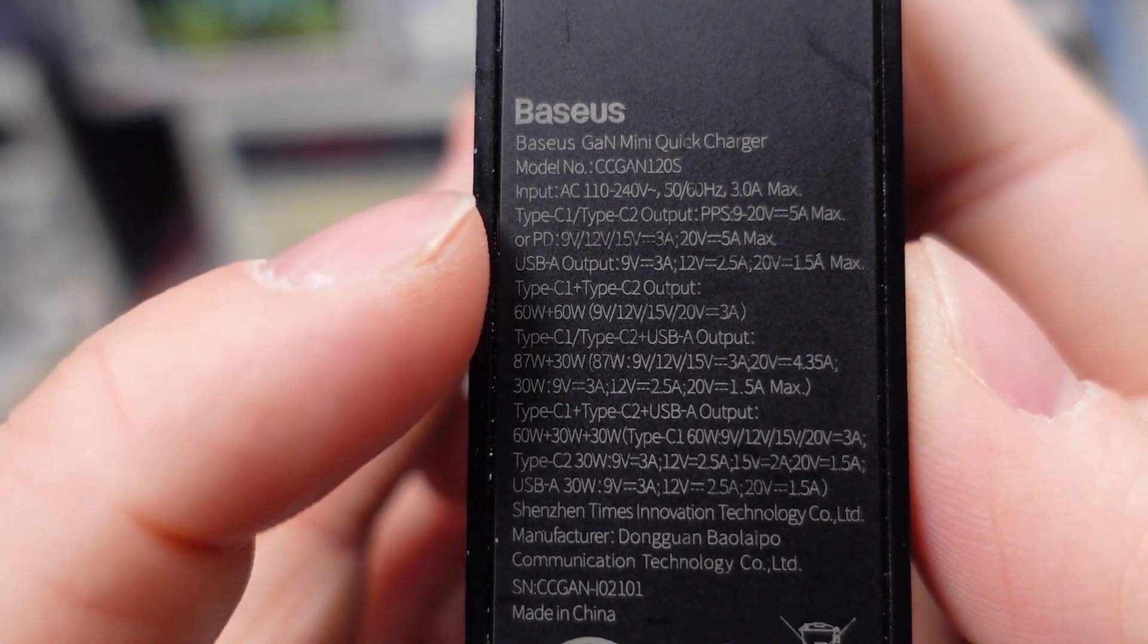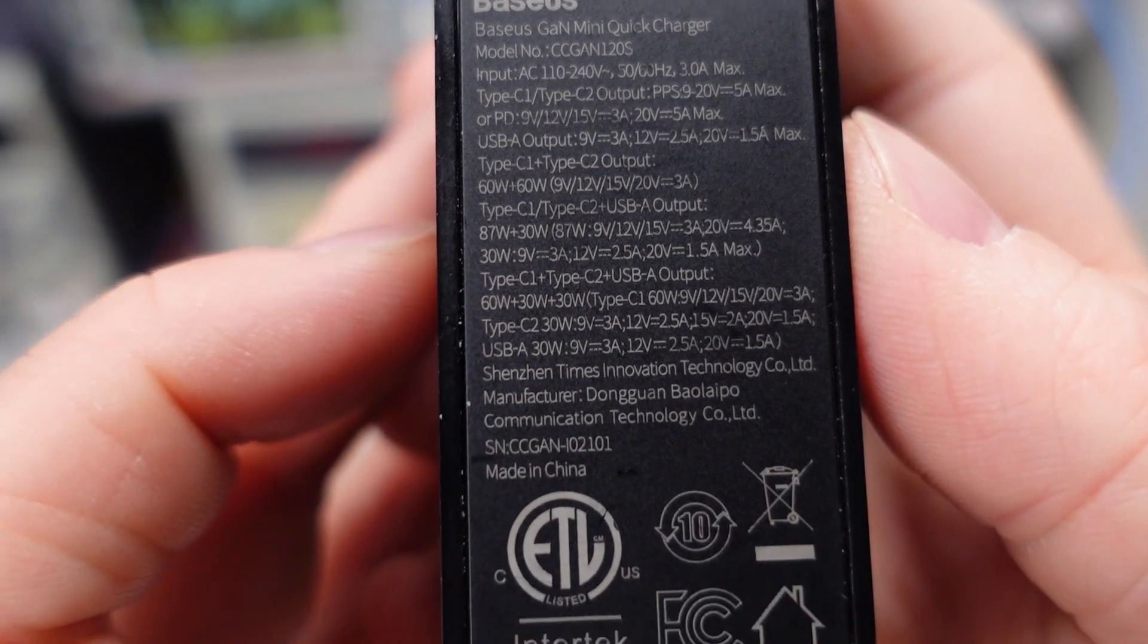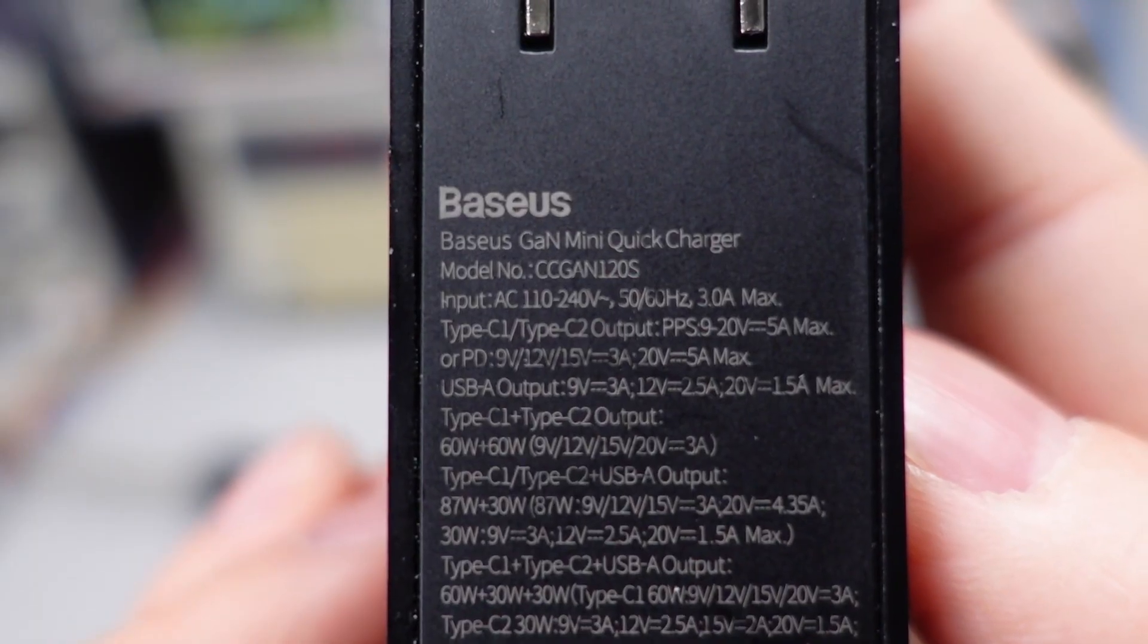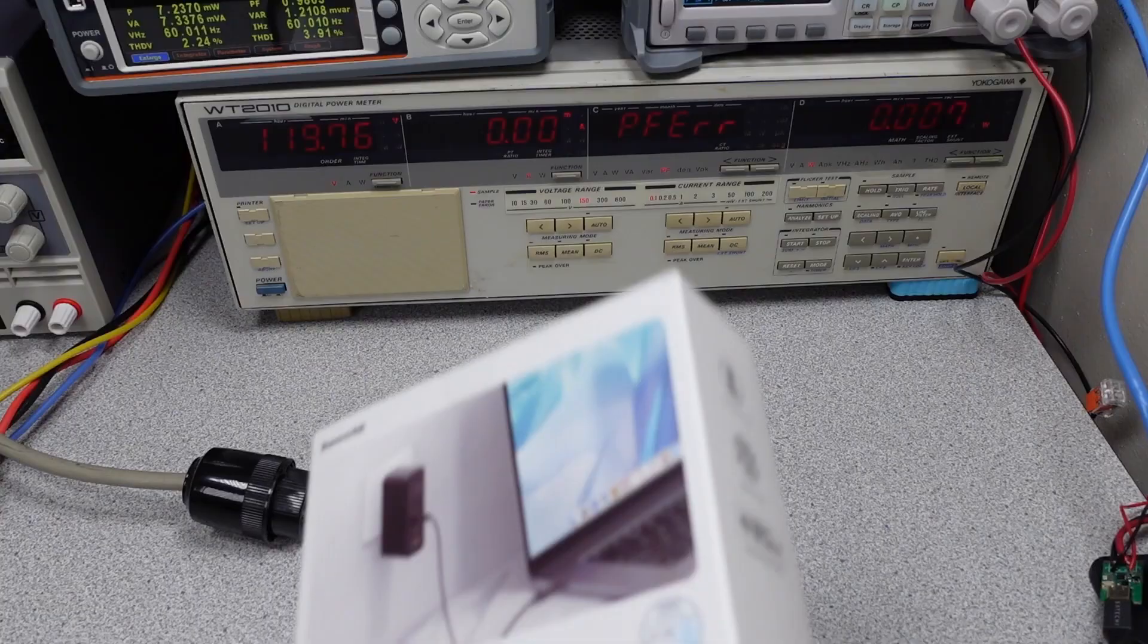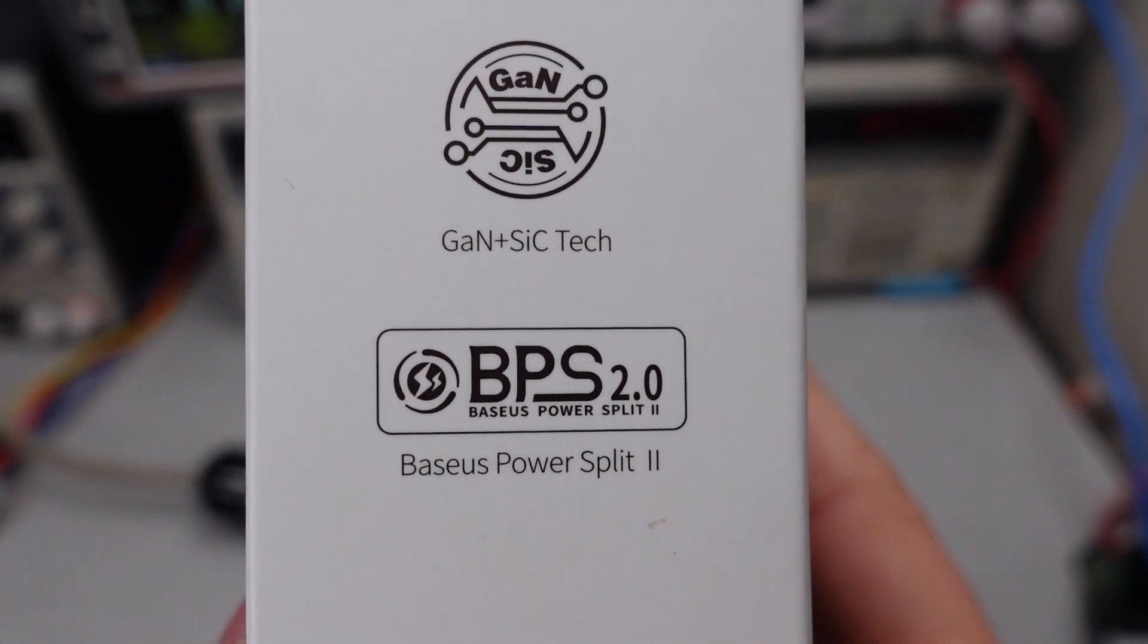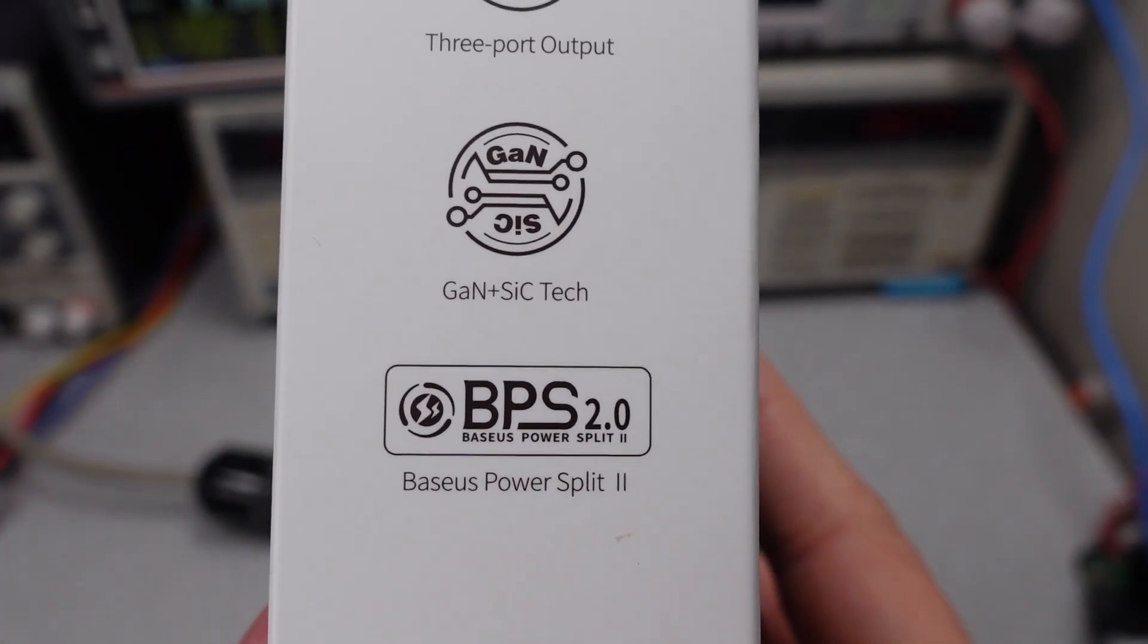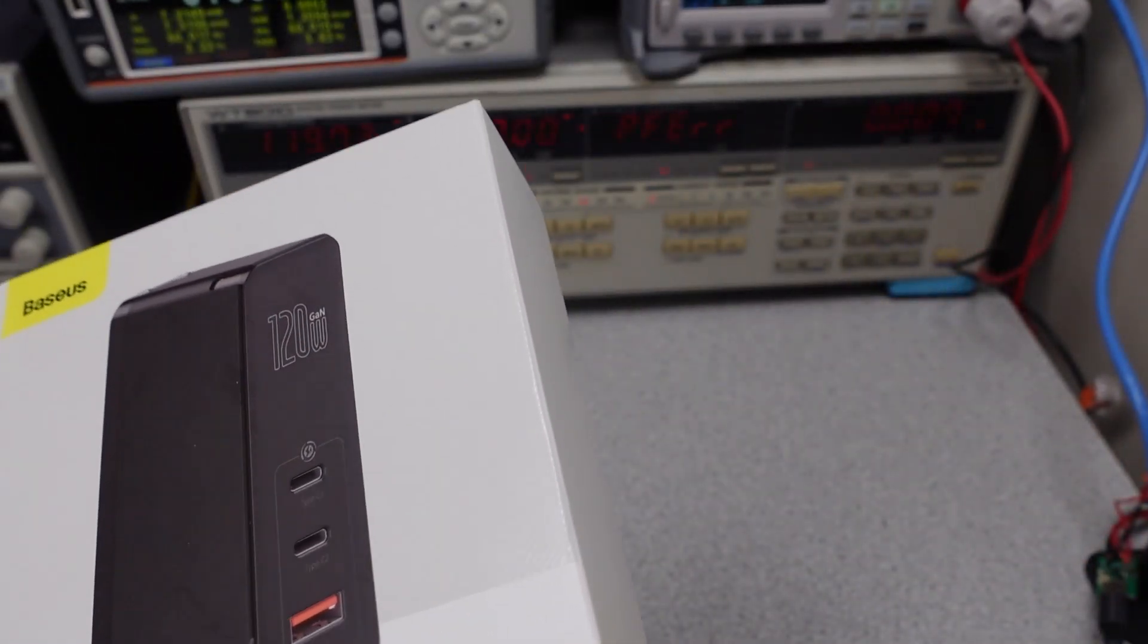Right on the device here, they give you a whole bunch of stuff, and that's because it can do a lot of things. We've got the safety listing. You can see that official model number, CCGAN120S. The box on this one had one interesting claim. You can see it uses both gallium nitride and silicon carbide technology. These are both wide bandgap semiconductors. I'm going to have to do a teardown of this thing to get some more information on how this thing actually works.